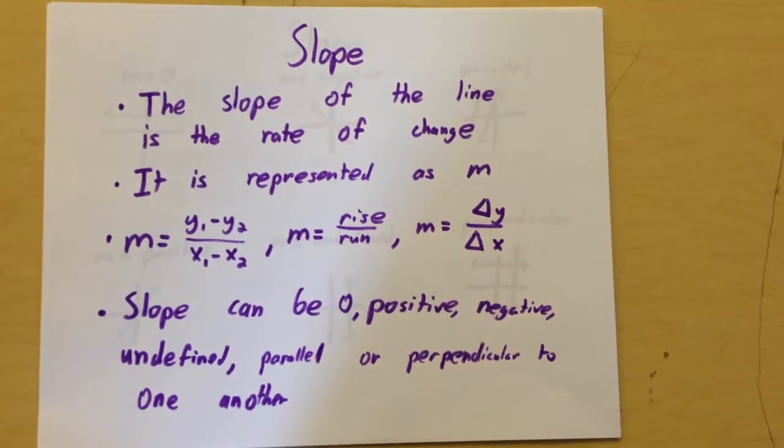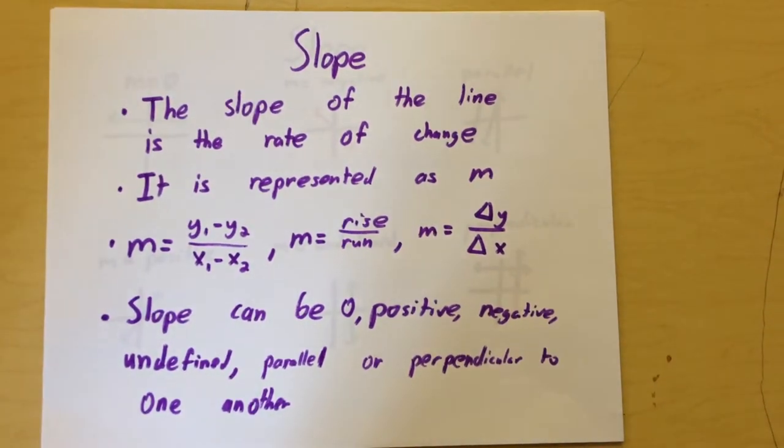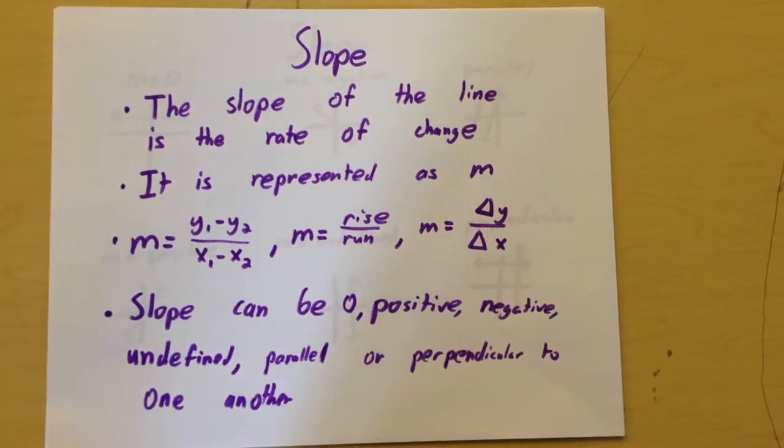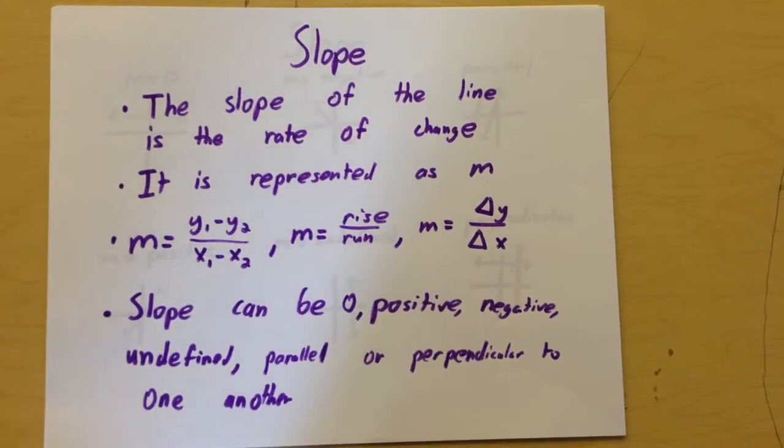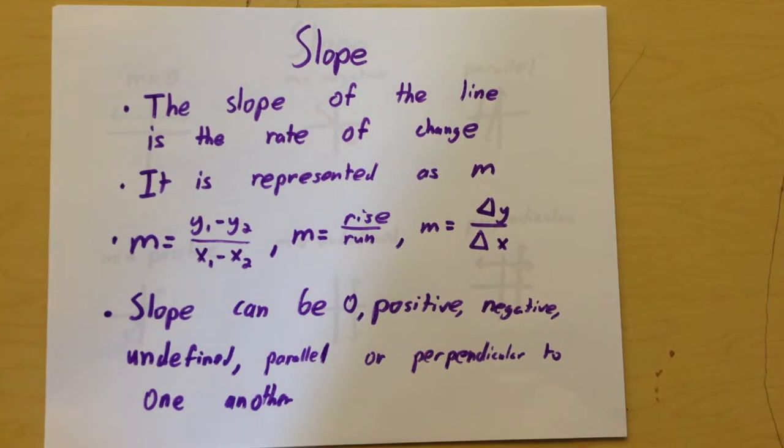It's also found by calculating the rise divided by the run over an interval of space. And you can find it with delta Y over delta X, which represents change in Y over change in X.